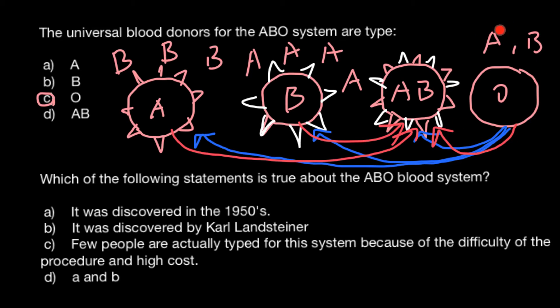So how is it possible that blood group O is the universal donor? The answer is that blood is never transfused as it is — it is separated into its components. One component would be red cells, another would be serum, and other components would be white blood cells. Usually the white cells are separated, the serum is also separated, and all these components are transfused separately.